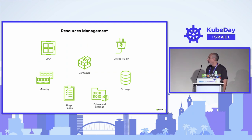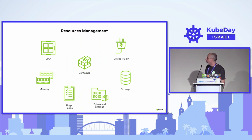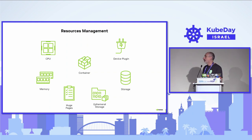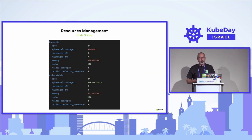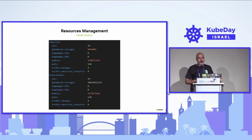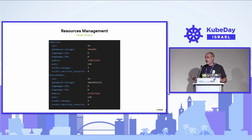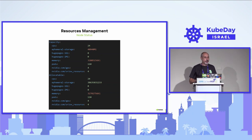What resources can we allocate to our workload? First, we have regular ones: CPU, memory, and utilities. Then we have storage-related workloads. And finally, we have device plugin resources, for example, nvidia.com/gpu. These resources appear in the node status, which has two sections: capacity, the whole pool of resources on a specific node, and allocatable, which is what's still available to schedule future workloads.